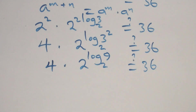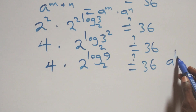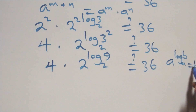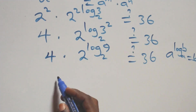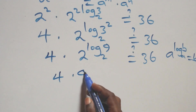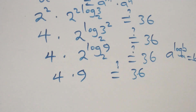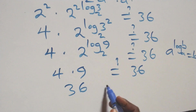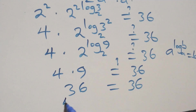Using the identity a raised to power log b base a equals b, we get 2 raised to power log 9 base 2 equals 9. Therefore, 4 times 9 equals 36, which equals 36 on the right-hand side. The left-hand side equals the right-hand side, confirming our solution.